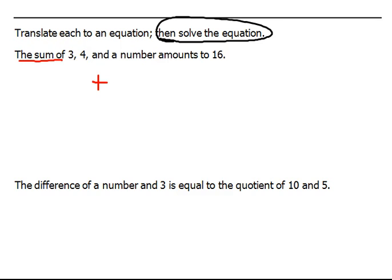Our problem says the sum of, which means we're going to be adding some things. And what things? Three, four, and a number. So, we're going to add 3 + 4 + some unknown number. Then we have amounts to, which is a key word for equals, 16. This is our equation. We have now translated that.